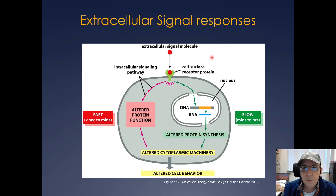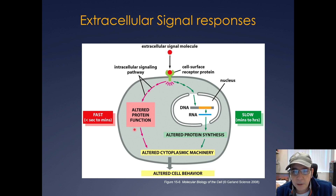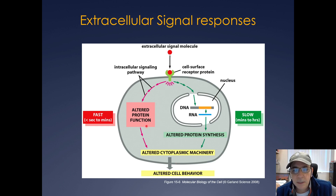With extracellular signals, there can be multiple responses. A signaling molecule will bind to the cell surface receptor, and intracellular signaling pathways can then lead to altered protein function. Alternatively, the intracellular signaling pathway can lead to a change in transcription, producing mRNA and altered protein synthesis, ultimately altering the cytoplasmic machinery and cellular behavior. Altering protein function directly can occur pretty fast, whereas changes in gene expression are much slower.